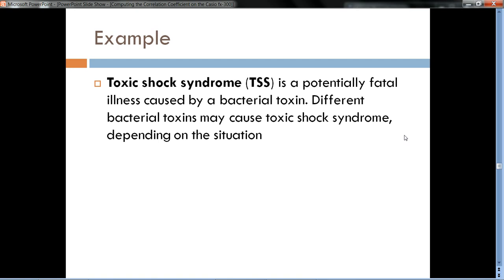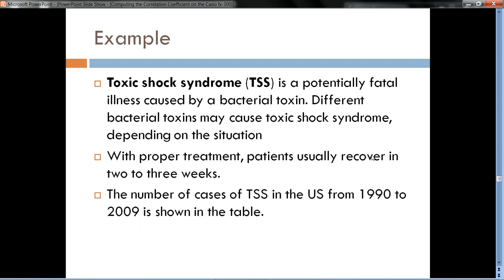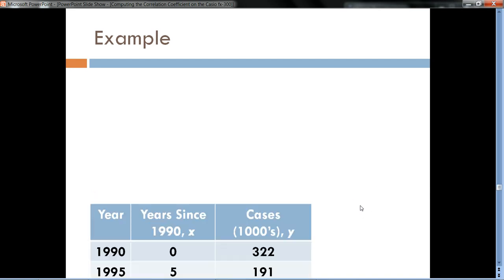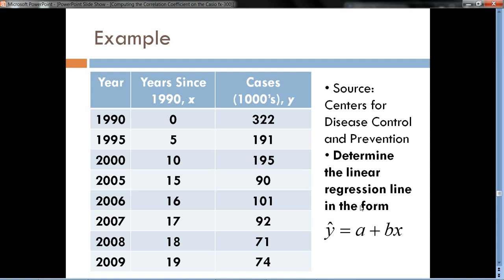Let's see how we do that. We'll do it by example. Toxic shock syndrome is a potentially fatal illness caused by a bacterial toxin. The situation usually recovers in two to three weeks with proper treatment, and here is a set of data for the number of cases of TSS in years where data was recorded from 1990 up to the latest data available in 2009.